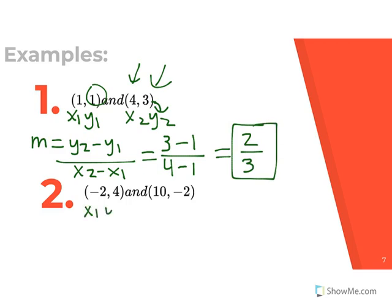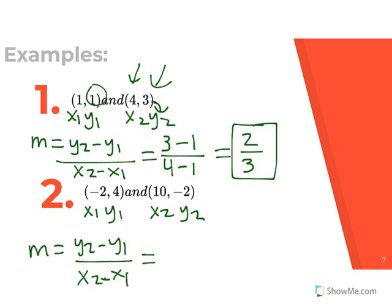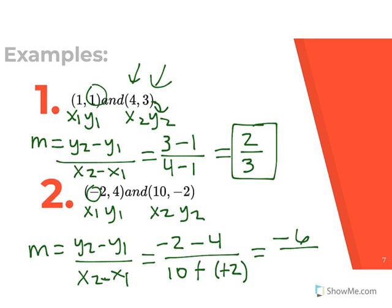Let's do another one. Label x1, y1 and x2, y2 — always label your points first. m equals y2 minus y1 over x2 minus x1. y2 is negative 2, minus y1 which is 4; x2 is 10, minus x1 which is negative 2. Be careful: you have a negative minus 2 — do not drop that negative. Same signs means add: negative 2 plus negative 4 is negative 6. Negative times negative is positive: 10 plus 2 is 12. Simplify: 6 goes into 6 once and into 12 twice, giving negative 1 half.